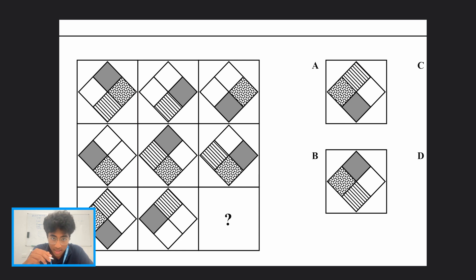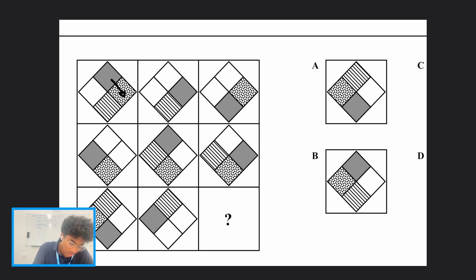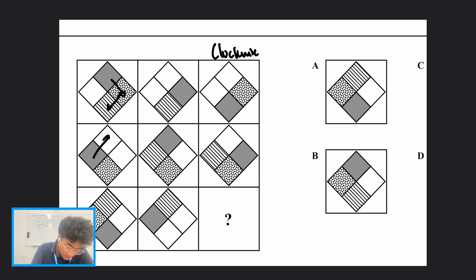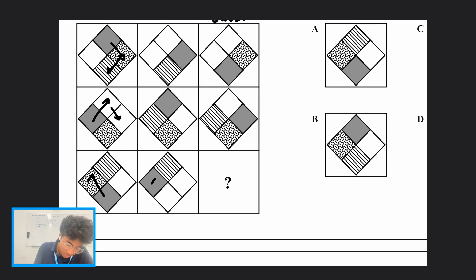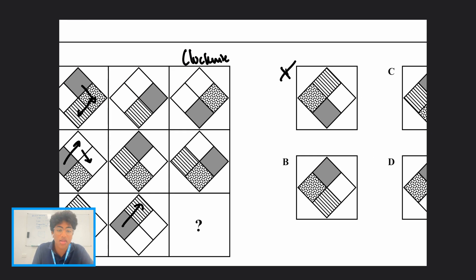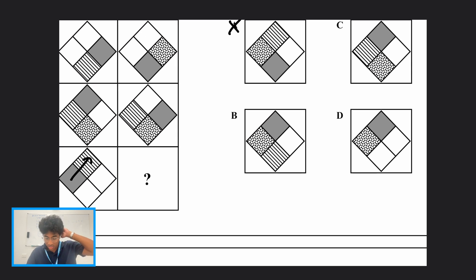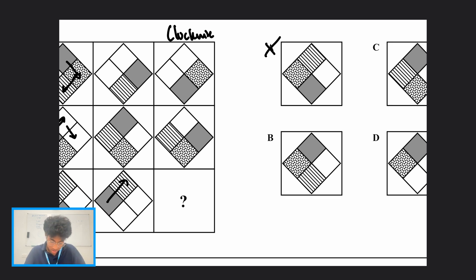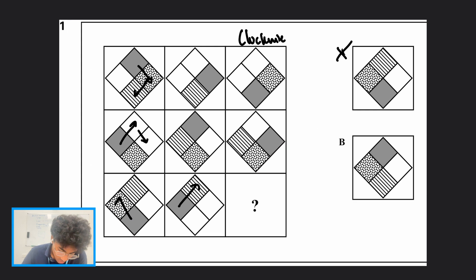Now let's begin the actual exam. Looking at the first question, let's immediately apply SCANS — starting with color. The gray dot rotates clockwise: from the top, then to this position, then to this position. We can confirm this pattern holds. So in the mystery image the gray dot must continue clockwise, which means option A cannot be the right answer. Process of elimination — the gray square has to be in the top position.